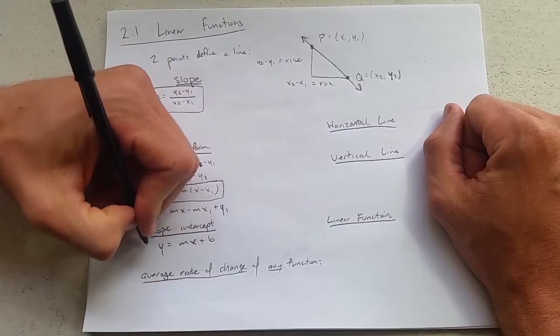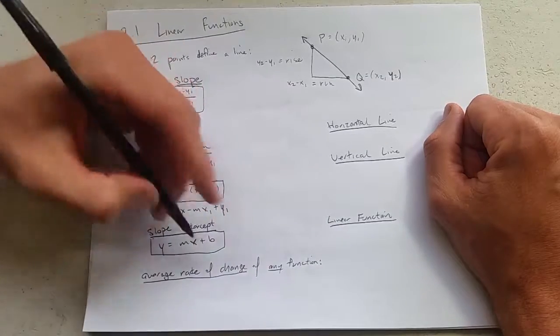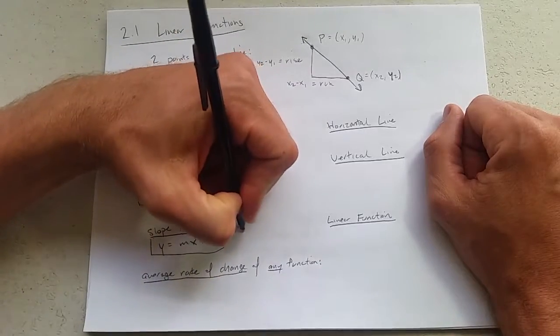And if we group these two together right here, we have slope intercept form. And all I did was I called b,